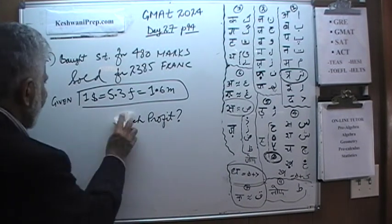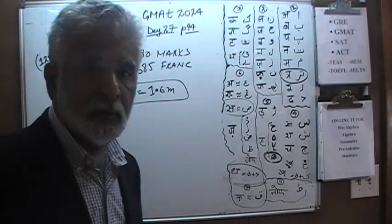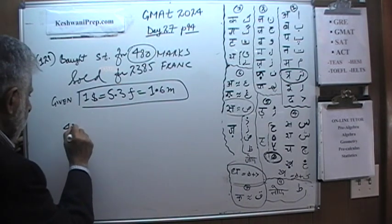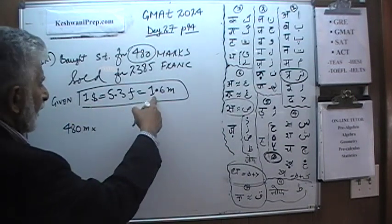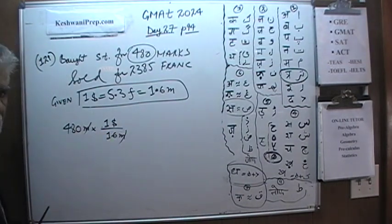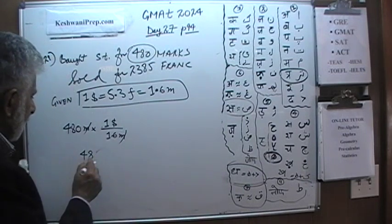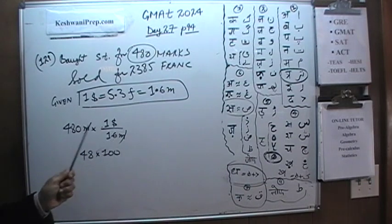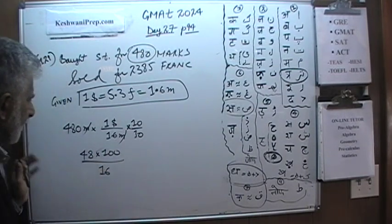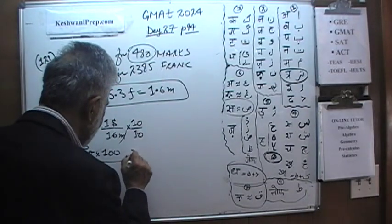Let's see what we can do. The first thing we are going to do is convert both figures — the marks and the French francs — into dollars. He paid 480 marks, and we are told one dollar is equal to 1.6 marks. So marks drop out, and we divide 480 by 1.6, which is the same as 4800 divided by 16. 16 goes into 48 three times, so he bought it for three hundred dollars.